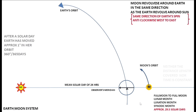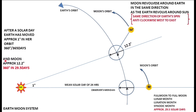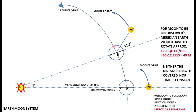In one day the Earth moves about one degree in its orbit — 360 degrees in 365 days. During the time the Sun returns to the observer's meridian, the Moon would have moved approximately 12.5 degrees, because it covers 360 degrees in 29.5 days. For the Moon to come back to the Earth's meridian, the Earth has to rotate an extra 12.5 degrees, which takes approximately 49 minutes.